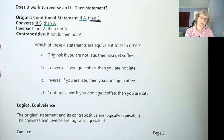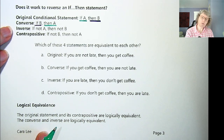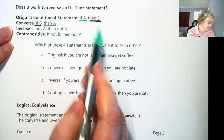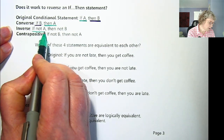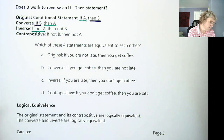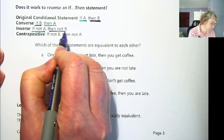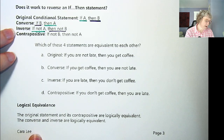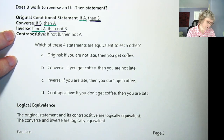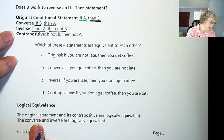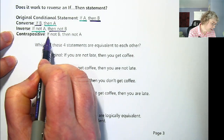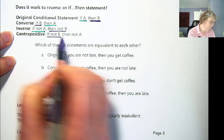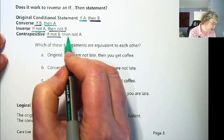So they've actually changed the meaning of the statement. The inverse is when you put a 'not' in both of them — you keep the original if and the original then, but you add 'not.' So if not A, then not B. And then the contrapositive is the flipping around — it's really the converse of the inverse. If not B, then not A.